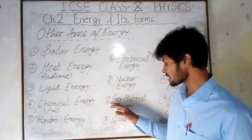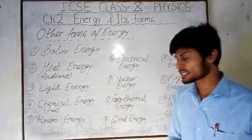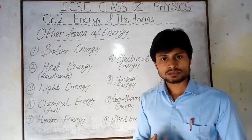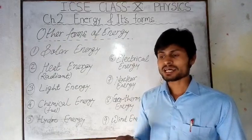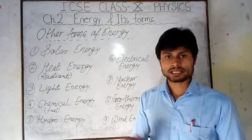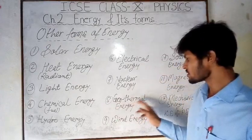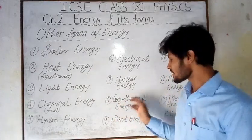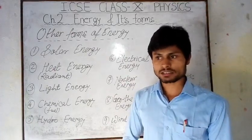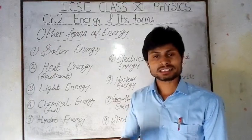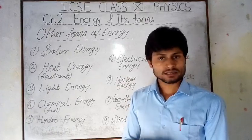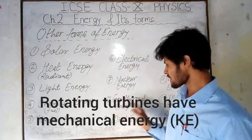The fourth point is geothermal energy. Geo means the earth — inside the earth there are rocks at high temperature which are sometimes released. This releases energy that can be utilized for different purposes. In some places there is an opening on the surface of the earth, from which high-temperature steam comes out. This steam can rotate turbines for the generation of electricity.